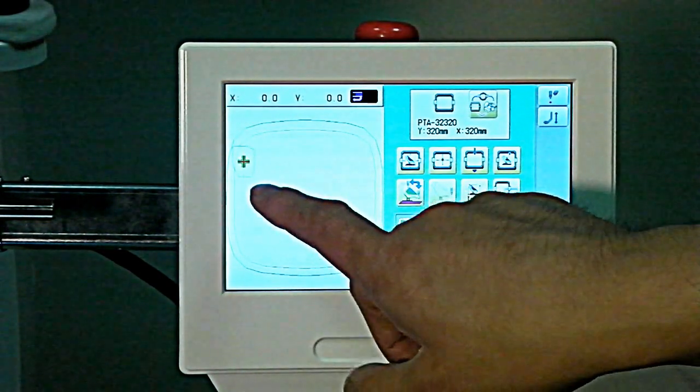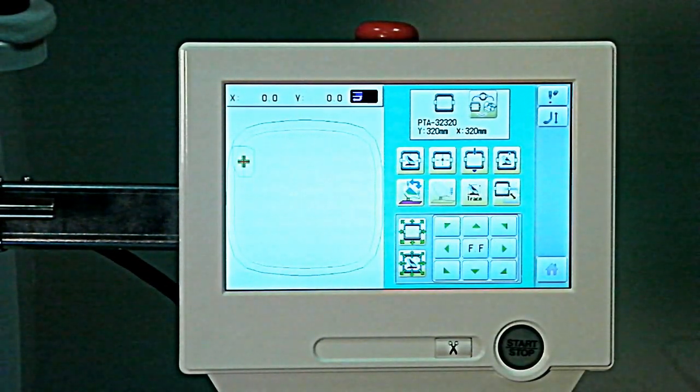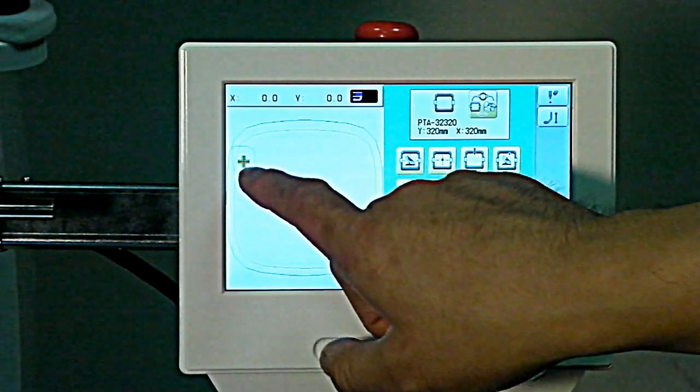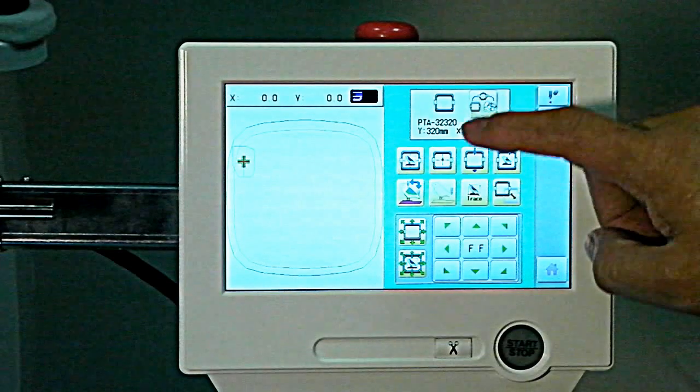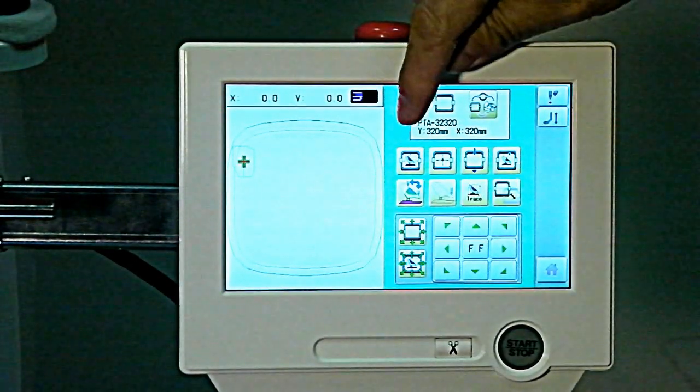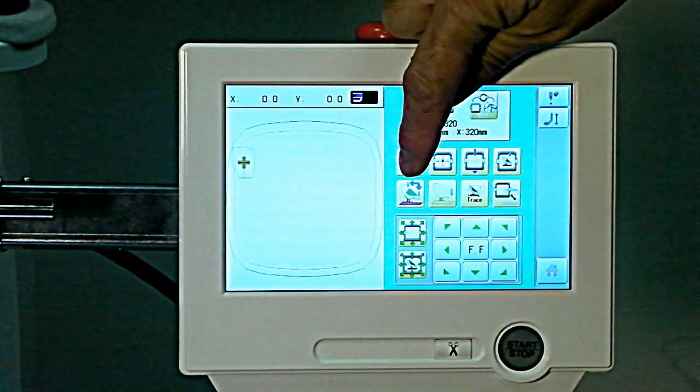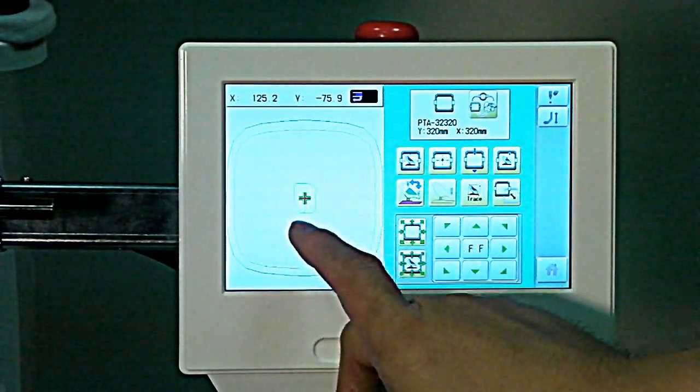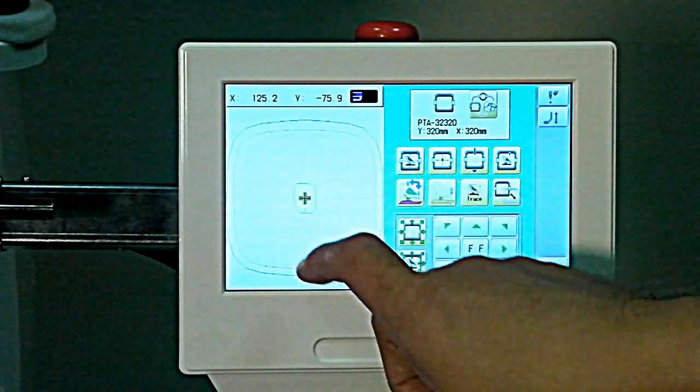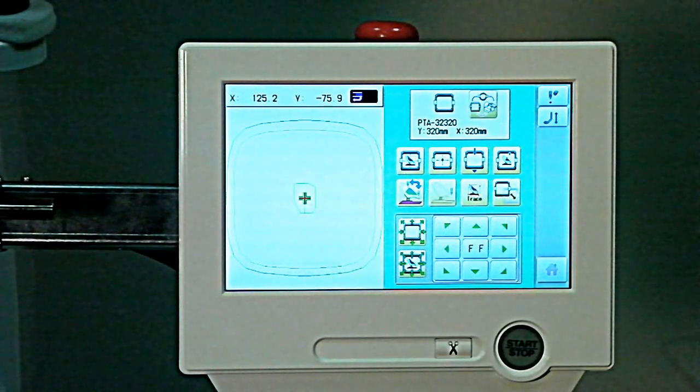So if we want to move this to the middle of the sewing area, things in this section here will let us do things like that. For example, this first button here automatically centers that position, and you can see as we did that now the blue outline of the design is showing centered in the hoop.